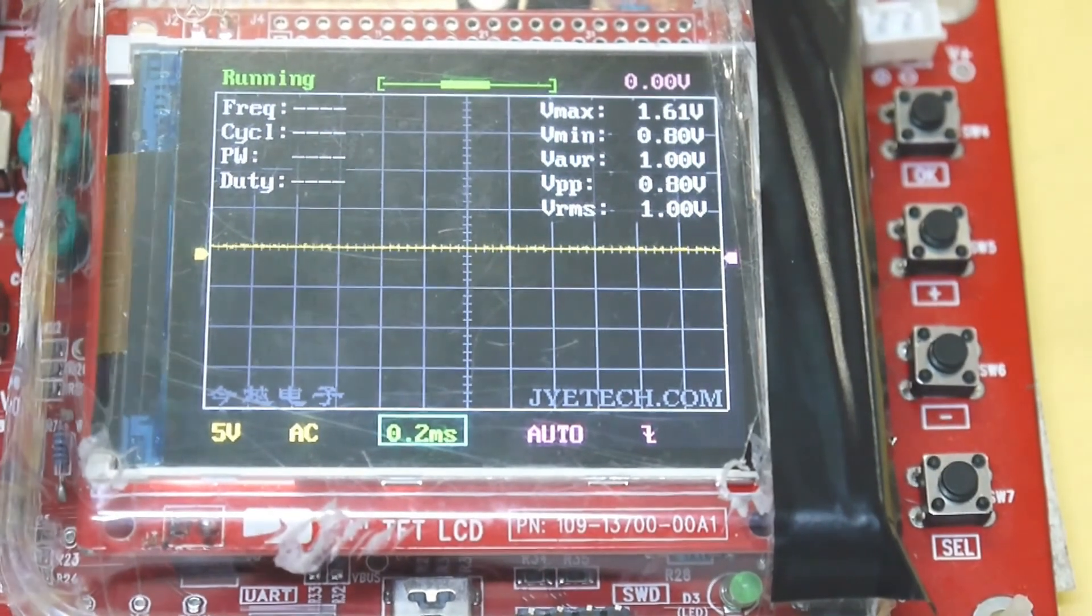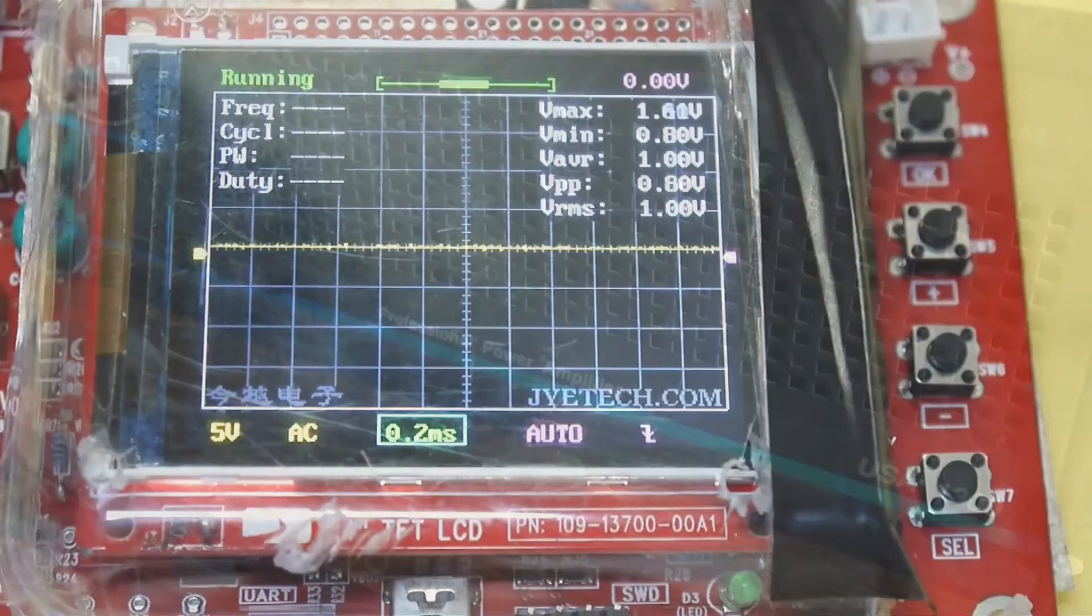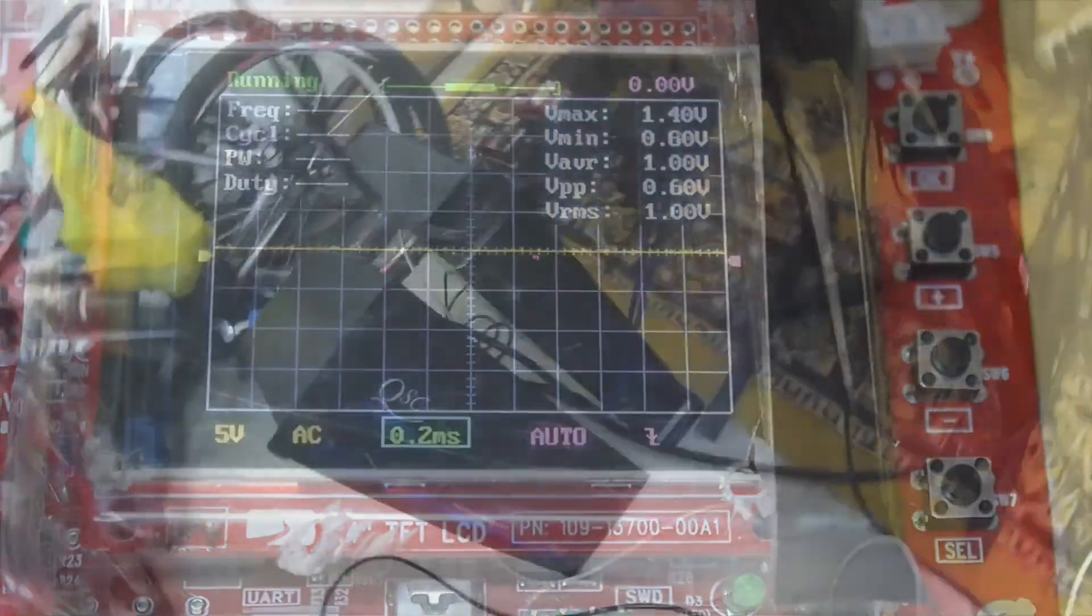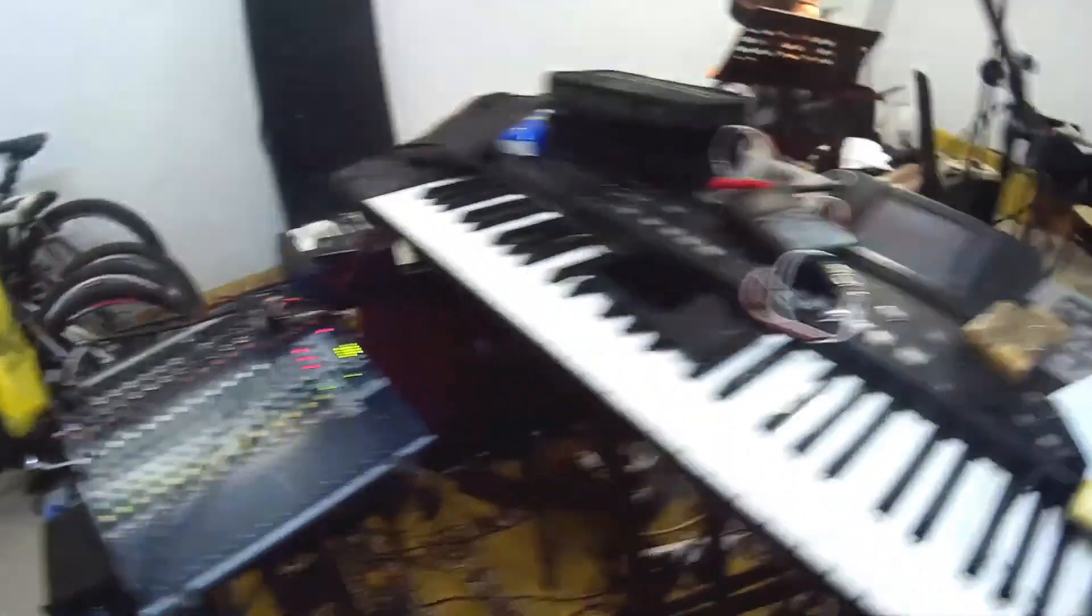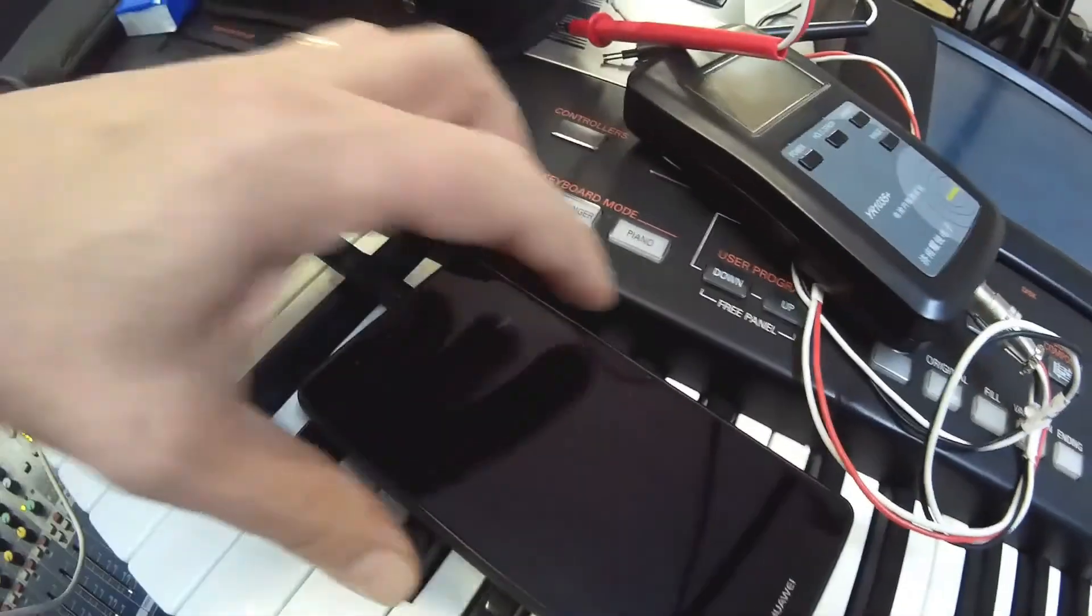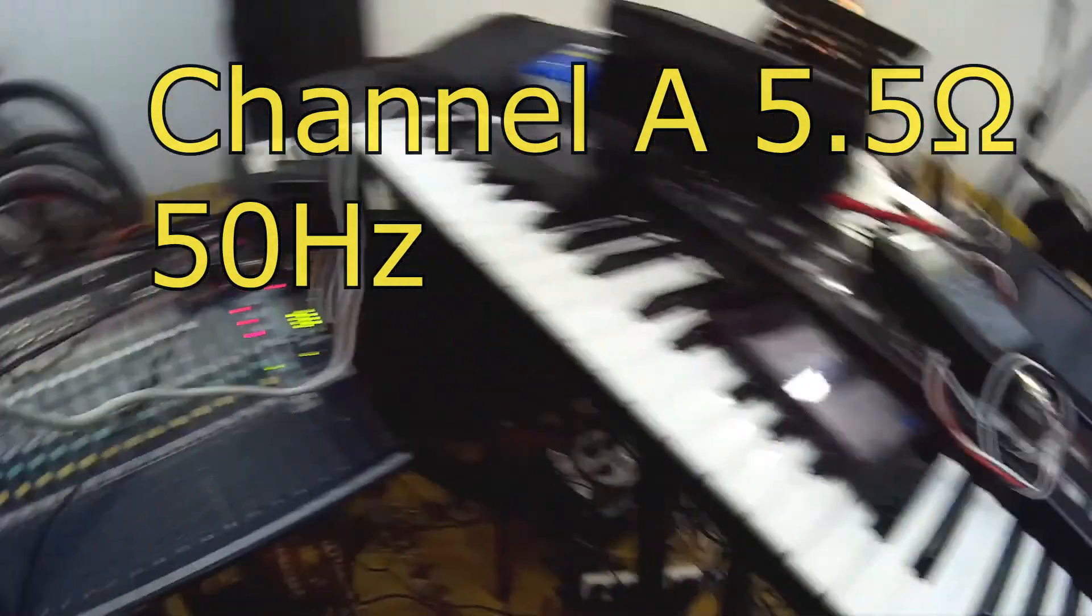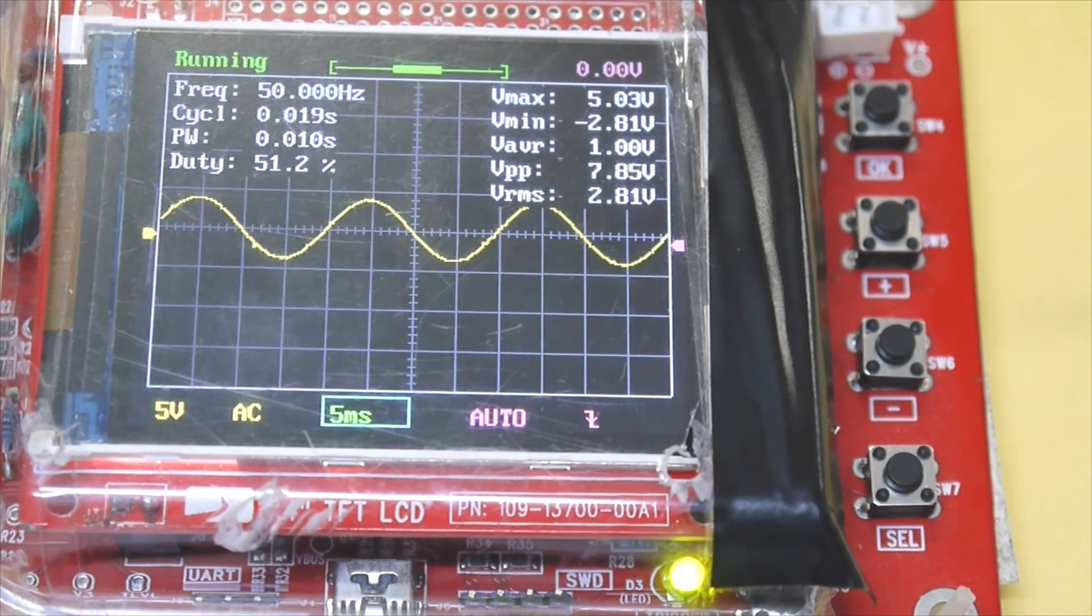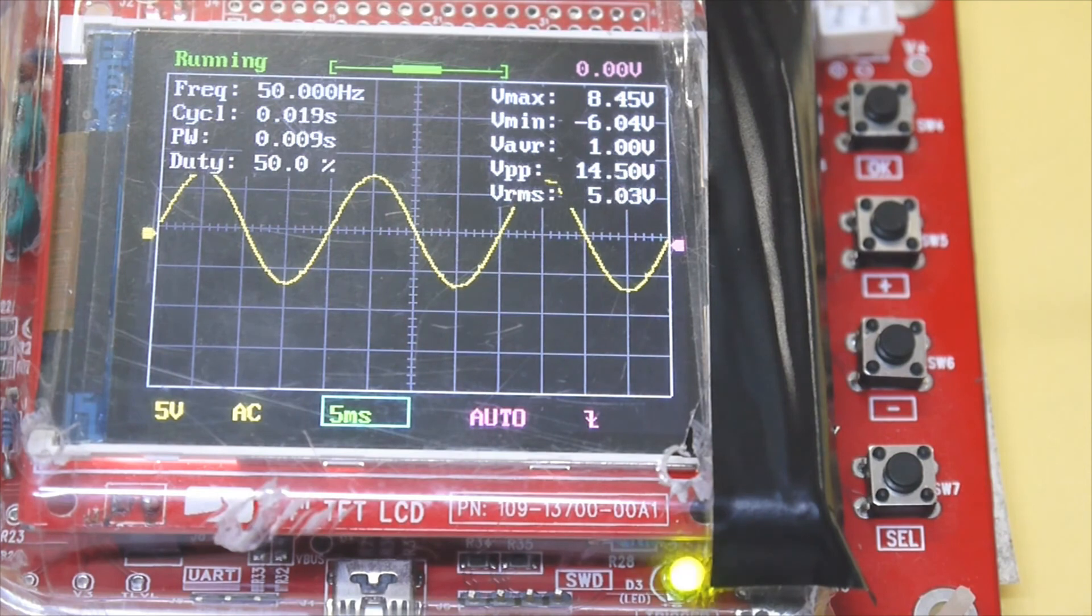The next test is for this C-Audio RA 3001. We're going to start with 50 Hz, of course 5.5 ohms. That's the first test. That's the clipping with 5.5 ohms.